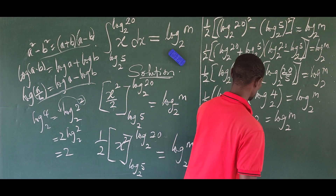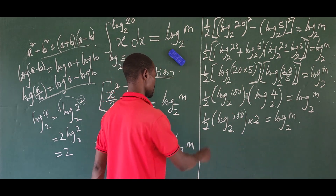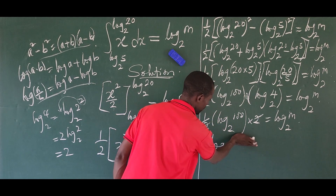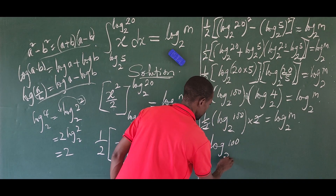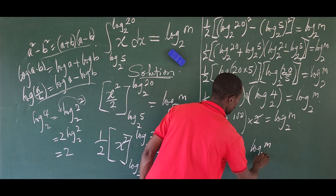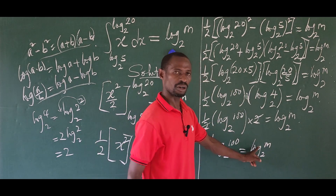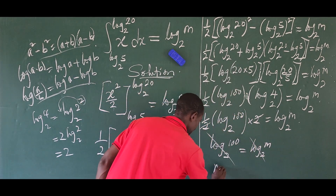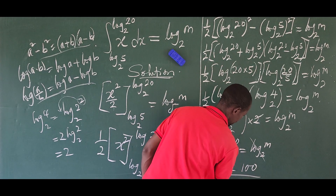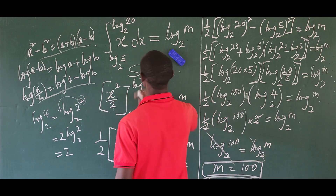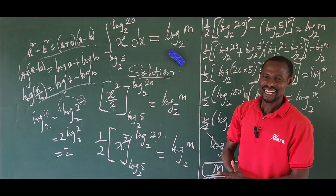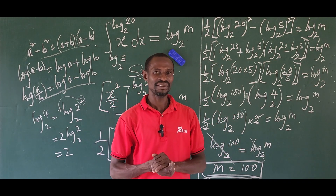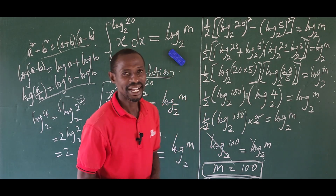We are dividing by 2 on the other side, so the 2 from log 4 base 2 and the denominator 2 cancel out. We're left with log 100 base 2 equals log m base 2. Since the bases and the log function are the same on both sides, m equals 100. So we are actually looking for the variable m, not x. That brings us to the end of today's class — give the video a thumbs up, drop a question in the comments, and see you next time.